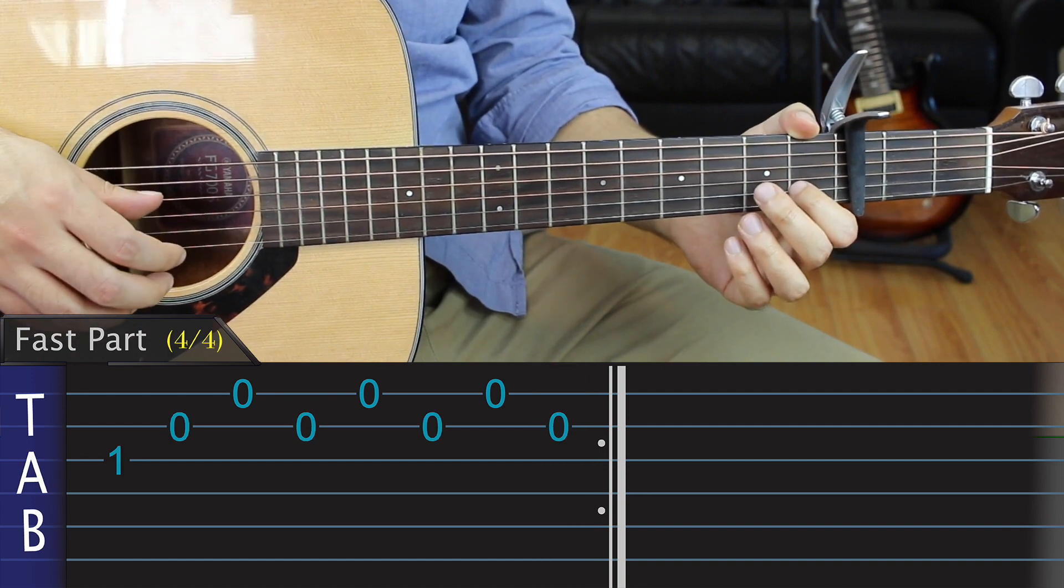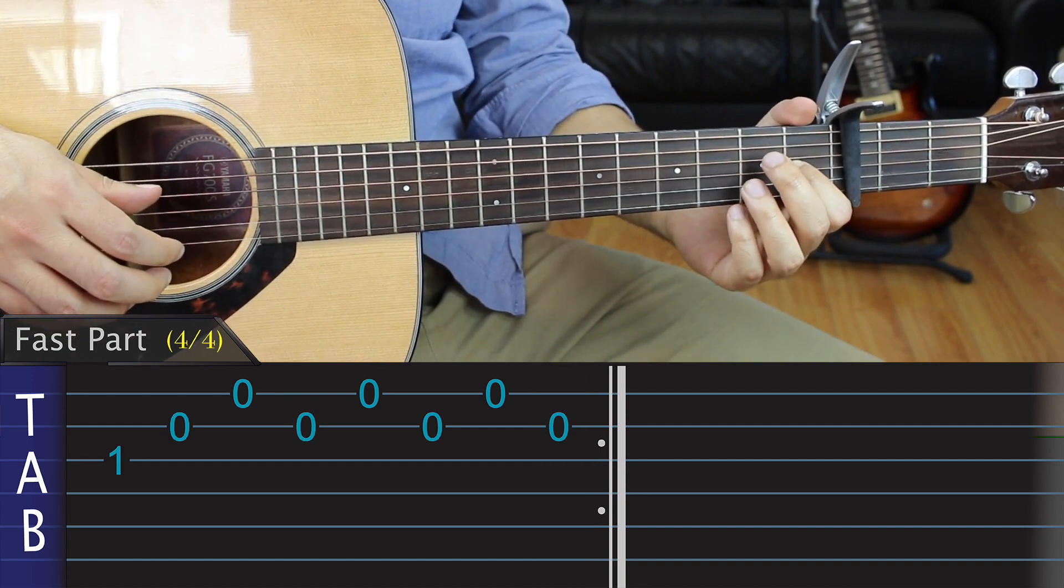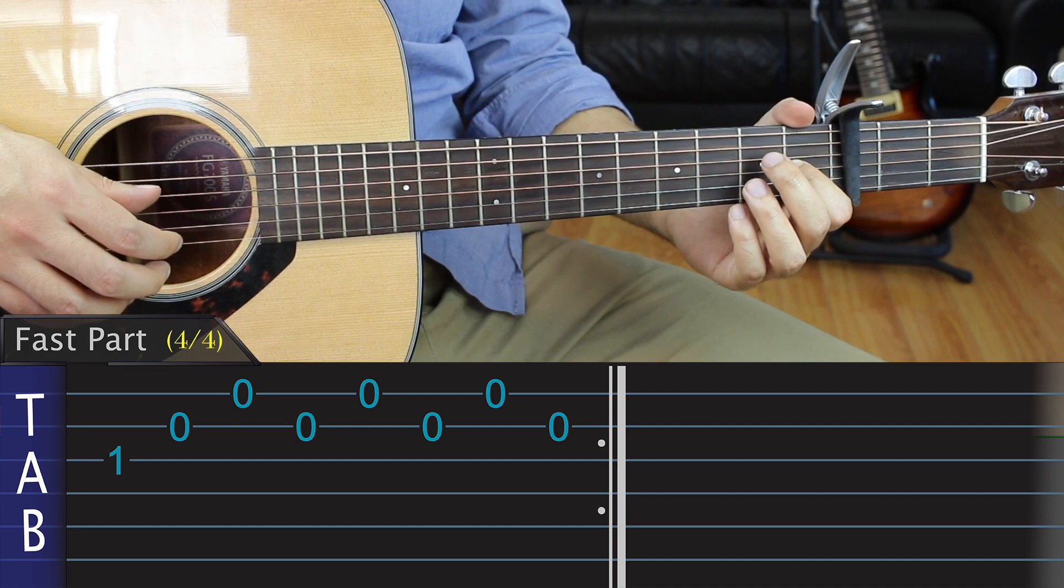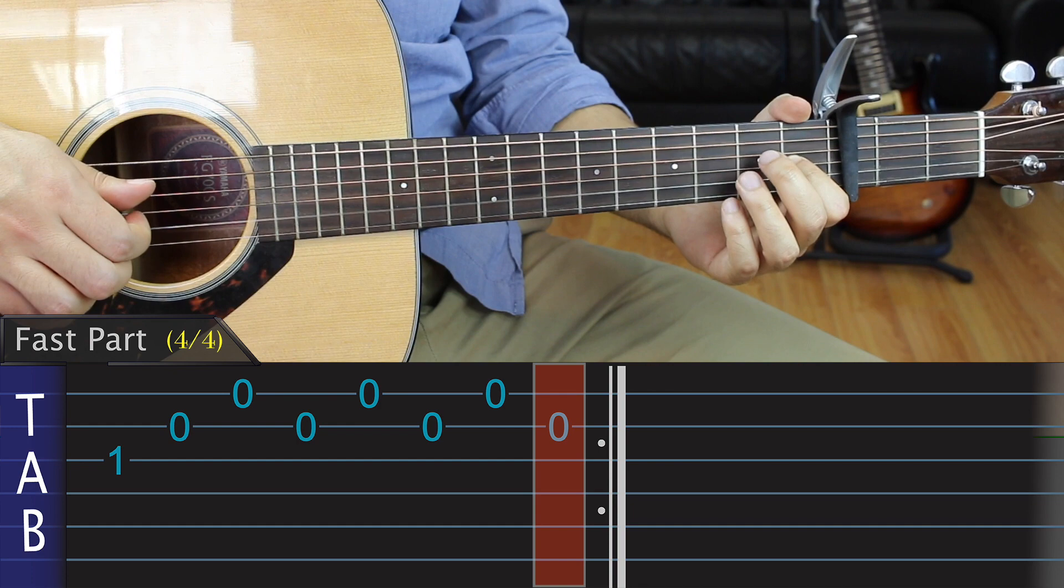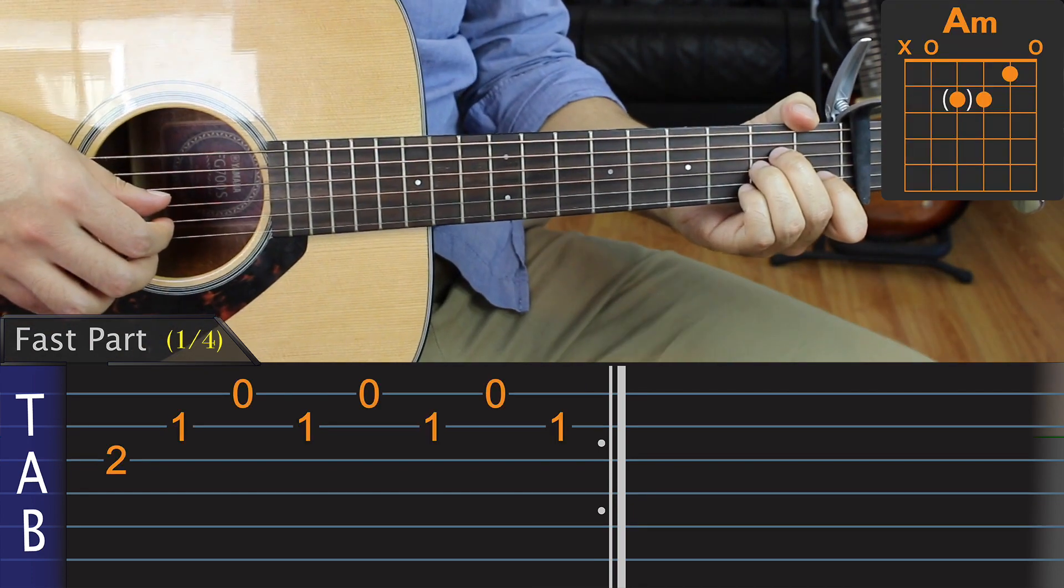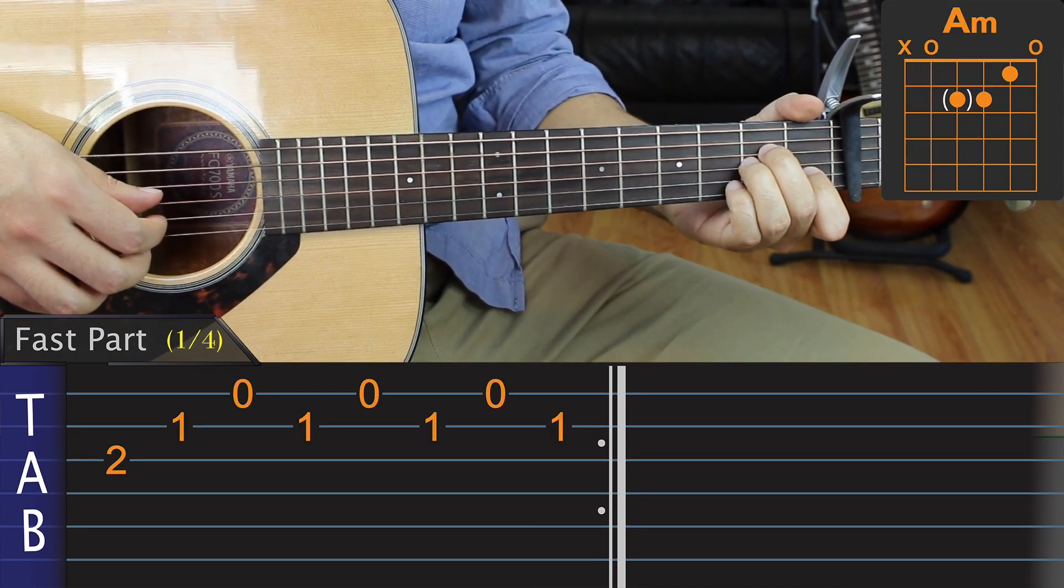And for the final section, we hold down the G, leave the other strings open, and apply the same right hand picking pattern. This is what the fast part should sound like when we combine each section.